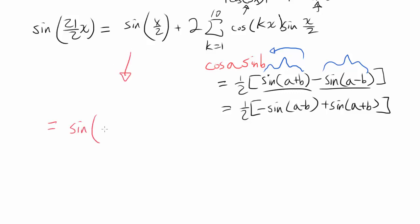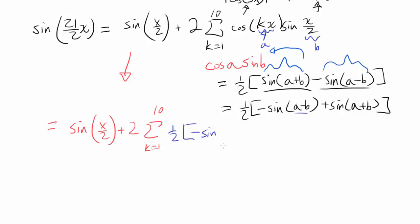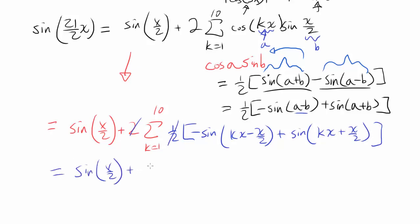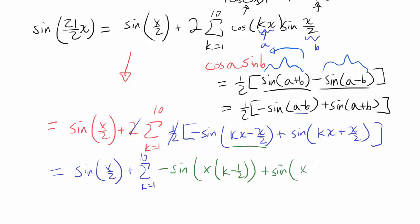Simplifying, this equals sine of x/2 plus 2 times the summation from k equals 1 to 10 of one-half times (negative sine of kx minus x/2) plus sine of kx plus x/2. That is, negative sine of x(k − 1/2) plus sine of x(k + 1/2). The 2 and 1/2 cancel out, leaving sine of x/2 plus the summation of those sine terms.